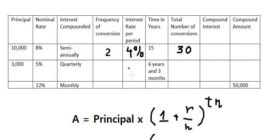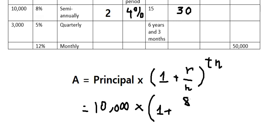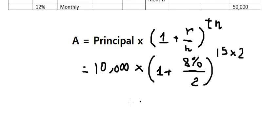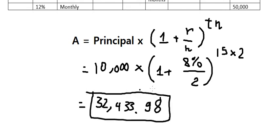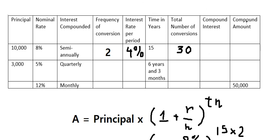R is 8%, N is 2, T is 15, multiplied by 2. We calculate this and get 32,433.98. This is the compound amount, so we put this value here.